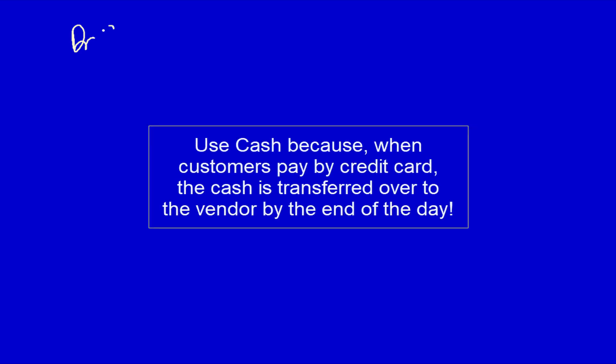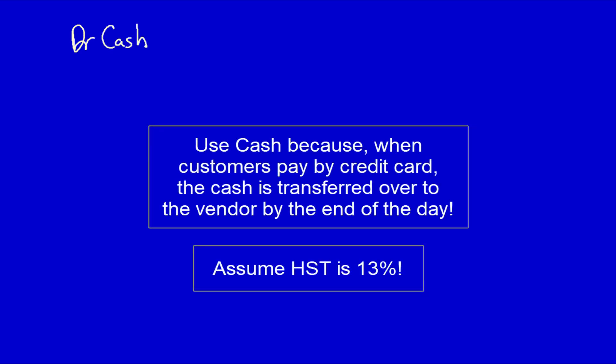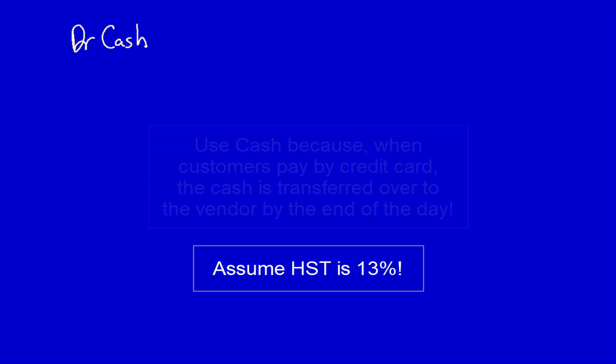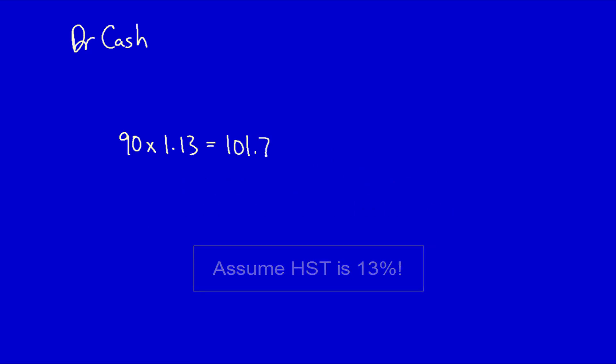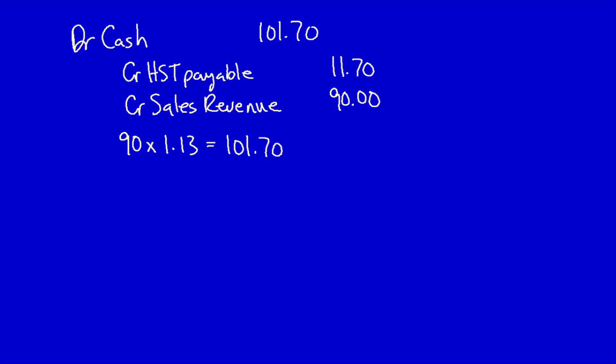On the date that ownership is transferred, the hardware store recognizes revenue with a debit to cash. Assuming HST is 13% here in Ontario: $90 × 1.13 = $101.70 — that's the amount of cash the hardware store would receive. However, $11.70 of that is remitted to the government as HST. The remaining $90 is revenue for the hardware store, because they have met all five steps of the revenue recognition criteria.